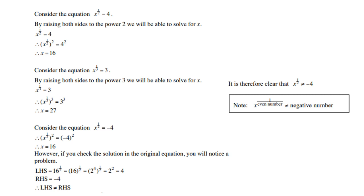Note that x to the power of a half cannot equal negative four. Very important: x to the power of an even number cannot equal a negative number — you must remember that. Consider the equation x to the power of one-third equals negative four; multiply both sides to the power of two and you get x equals negative four squared, which is sixteen. That works because two is even, but if the exponent were odd, it would not work.